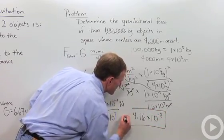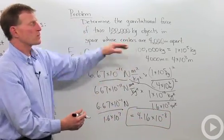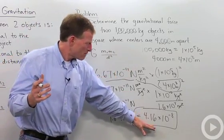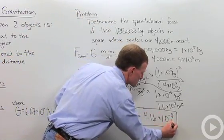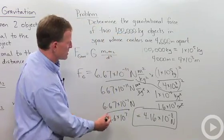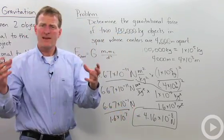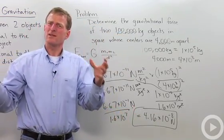So that is my gravitational force between these two objects. Now that's a really small number. That number is newtons, keeping my units there. And that shows that gravitation is really a small force.